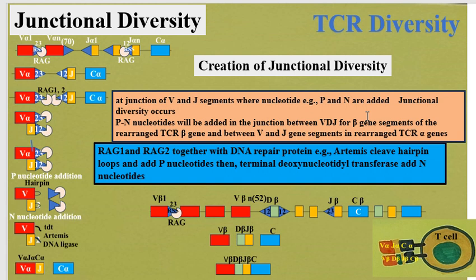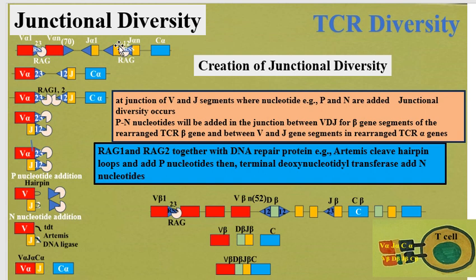This recombination to create diversity is governed by recombination signal sequences. These flank the three-prime side of variable alpha and the five-prime side of joining alpha for segments encoding the alpha chain. For the beta chain, recombination signal sequences similarly flank the three-prime side of variable beta and the five-prime side of joining beta.